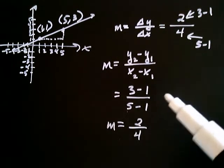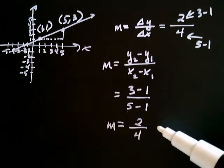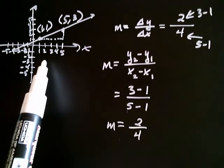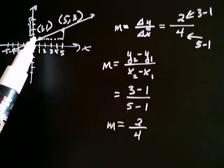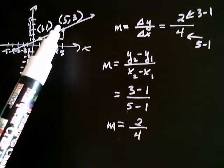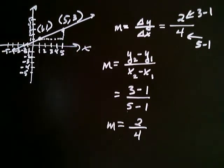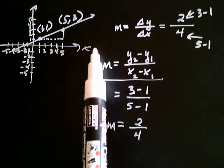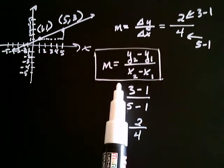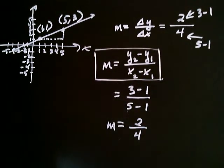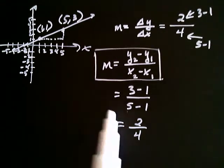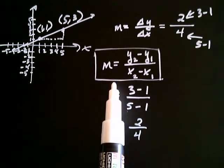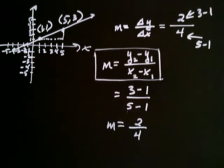So I can see that all I needed was the coordinates to find the slope of the line. I actually didn't even need the graph. All I needed to know was the first point one, one and the second point five, three. This is a very important formula that gets used a lot, so you want to remember it.